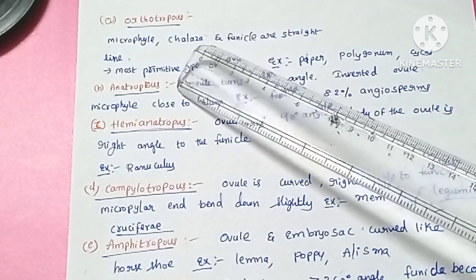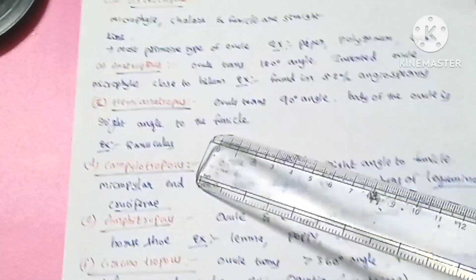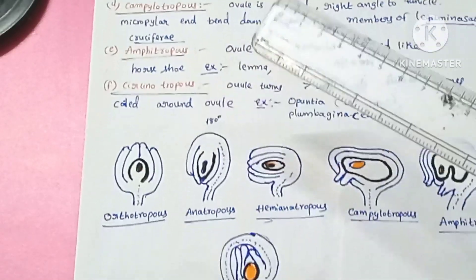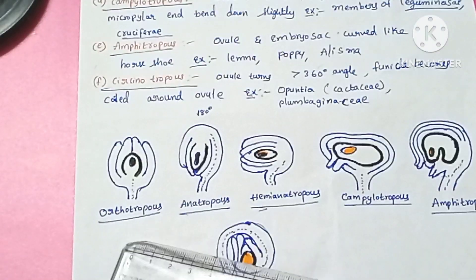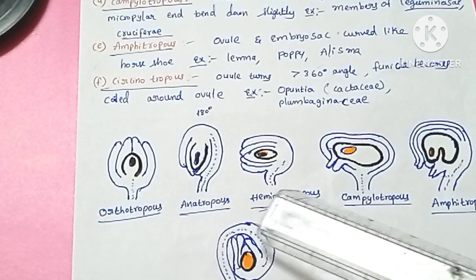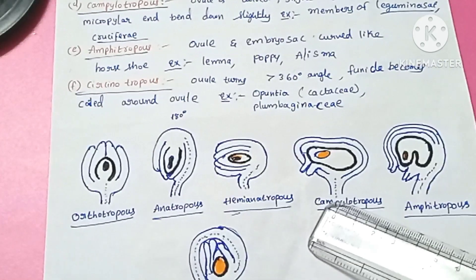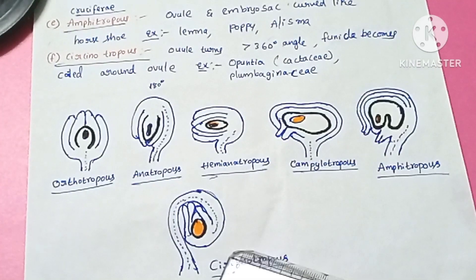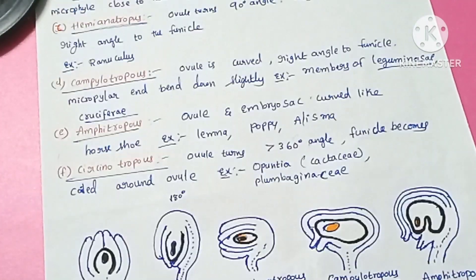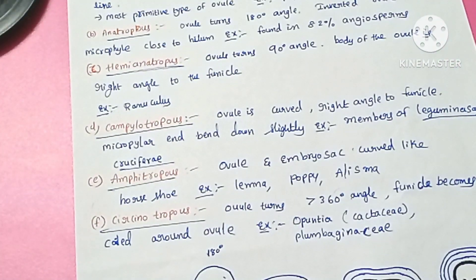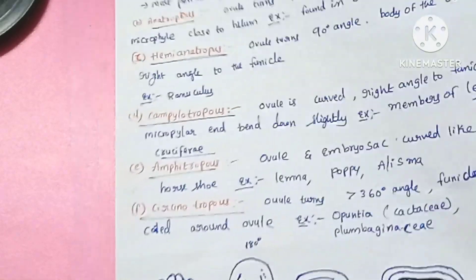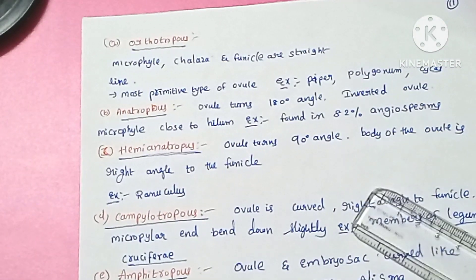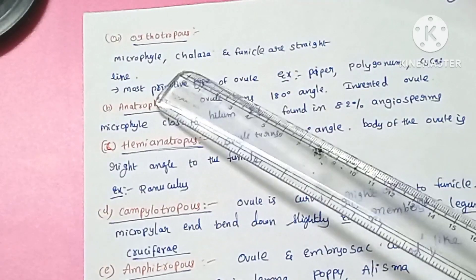The six types of ovules are: orthotropous, anatropous, hemianatropous, campylotropous, amphitropous, and circinotropous. The first type is the orthotropous ovule. In this ovule, the micropylar end, chalazal end, and funicle are all in one straight line.